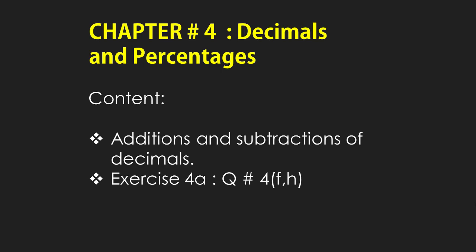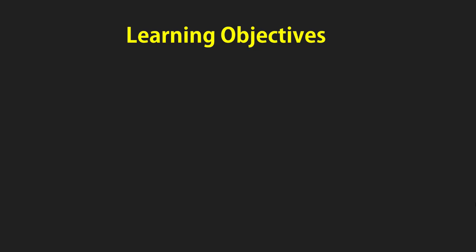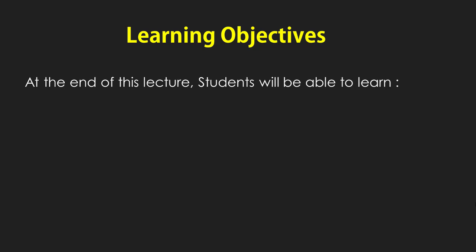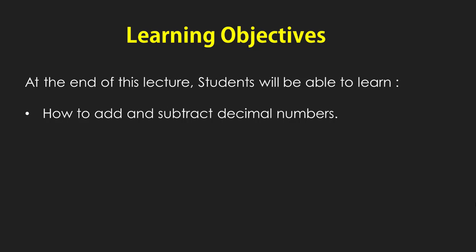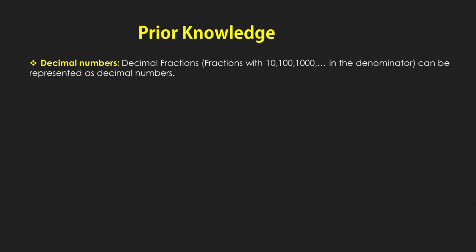We will cover exercise 4A, question number four, parts F and H. The learning objective is: at the end of this lecture, students will be able to learn how to add and subtract decimal numbers. We already learned decimal numbers, now let us revise them point by point. Decimal numbers, or decimal fractions, are fractions with ten, hundred, thousand, and so on in the denominator, and can be represented as decimal numbers.